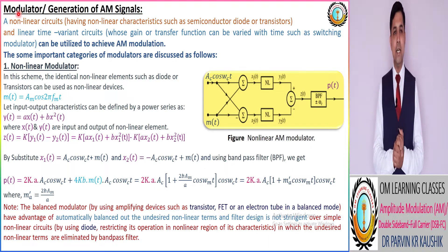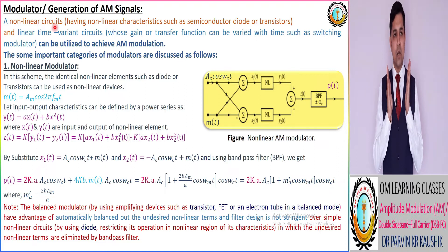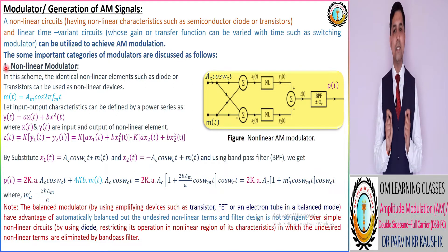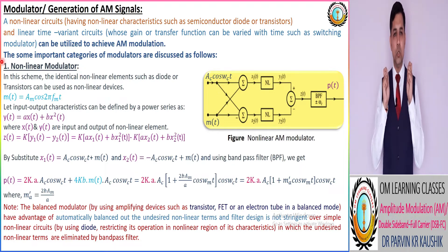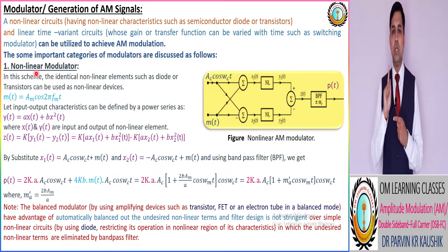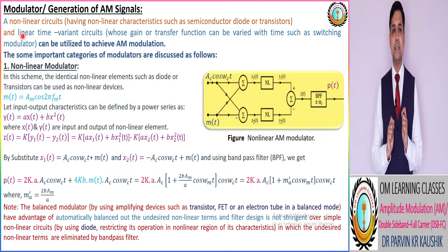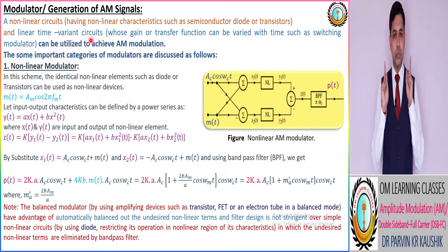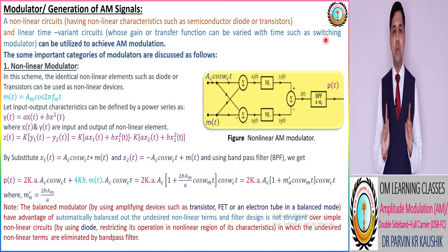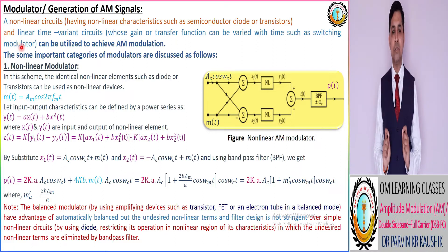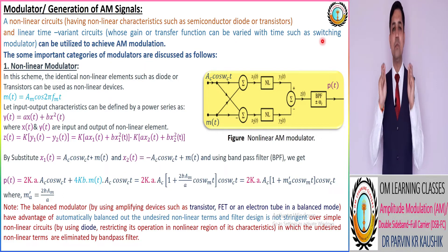In this we have two categories. The first category is according to non-linear circuits — circuits which have non-linear characteristics — and as per this category we have the non-linear modulator. The second category is the linear time-variant circuit whose gain and transfer function can be varied with time, and as per this classification we have the switching modulator.